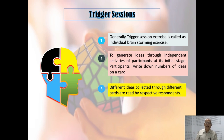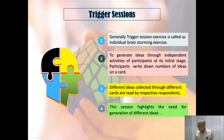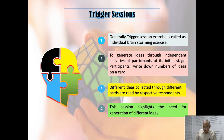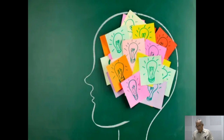Once these ideas are generated individually, without any exposure to others or other groups, then in the second phase we collate these ideas and put them before the group. Different ideas collected through different cards, recorded by different students, are then presented for generation of different ideas in the group.